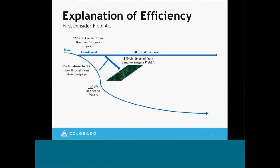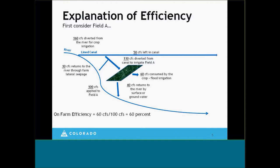Out of that 100 CFS applied to the field, 60 CFS is going to be consumed by the crop through flood irrigation. By consumed, I mean evapotranspiration — it's taken out of the system, out of the hydrologic cycle. The balance, that 40 CFS, is going to return to the river by the surface or through deep percolation into the groundwater and migrating back to the river. Our on-farm efficiency is that 60% number: out of 100 CFS diverted to the field, 60% got consumed.